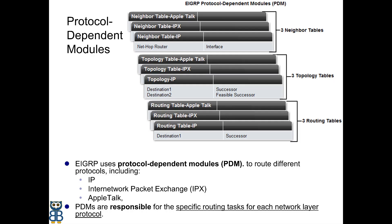Protocol Dependent Modules, or PDM, allow EIGRP to route different protocols, including IP, AppleTalk, and InternetWork Packet Exchange or IPX. PDMs are responsible for the specific routing tasks for each network layer protocol. For example, the IP EIGRP module is responsible for sending and receiving EIGRP packets encapsulated in IP, and using DUAL to build and maintain the IP routing table.